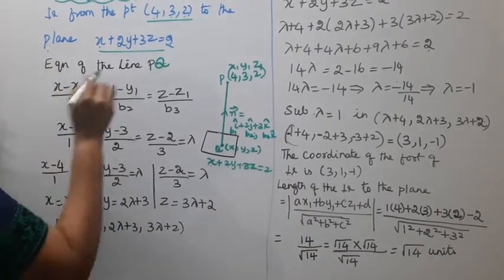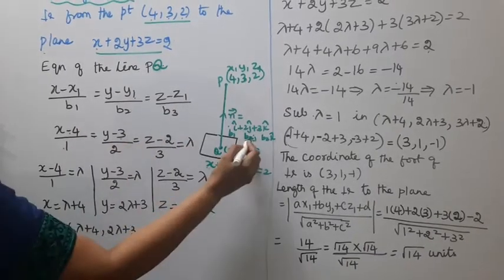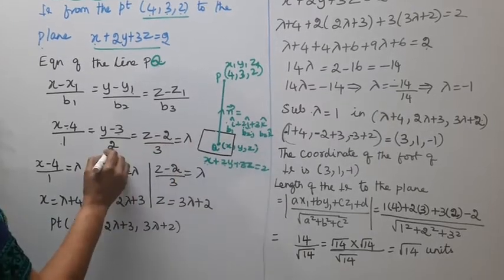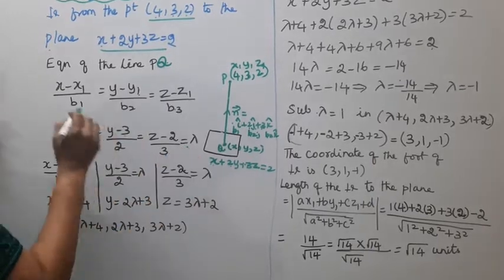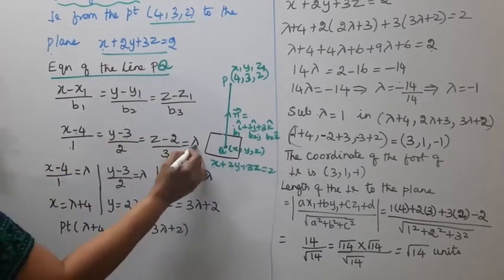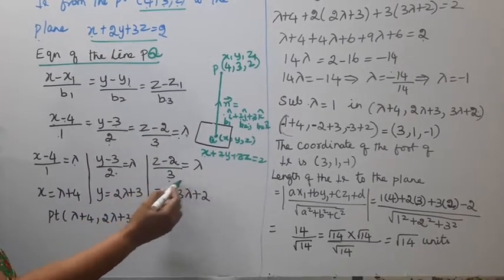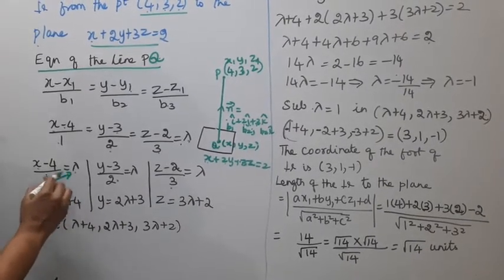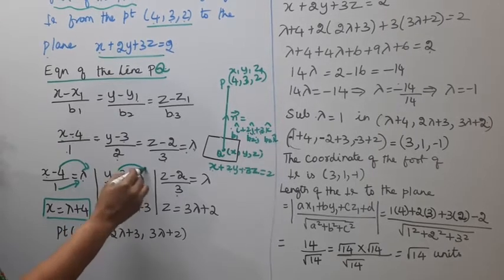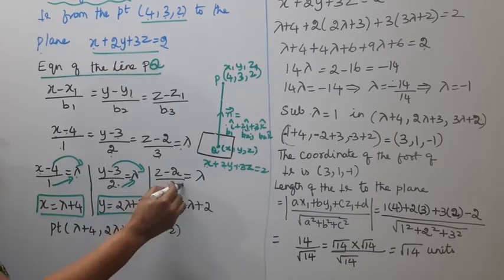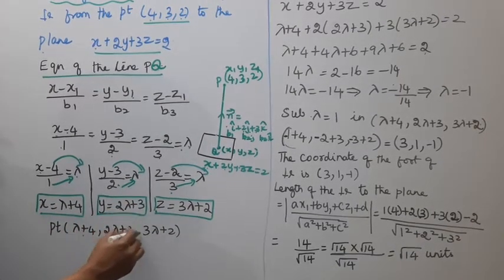Setting up the parametric line PQ through point (4, 3, 2) with direction ratios 1, 2, 3 (from the plane's normal): (x - 4)/1 = (y - 3)/2 = (z - 2)/3 = λ. This gives the parametric coordinates: x = λ + 4, y = 2λ + 3, z = 3λ + 2.